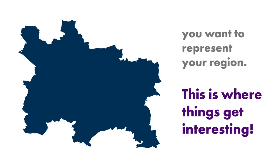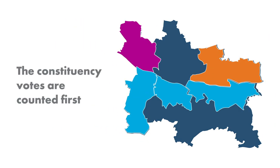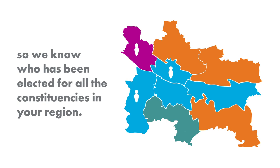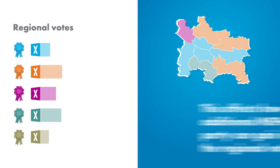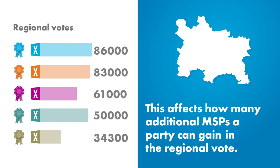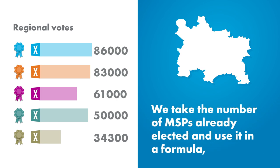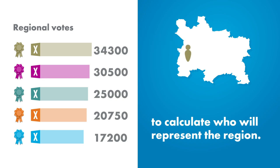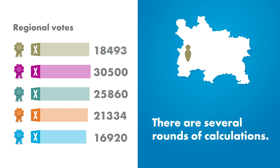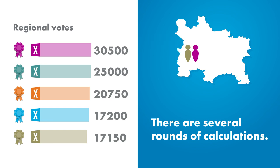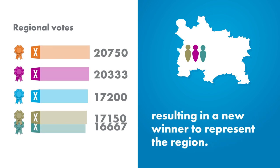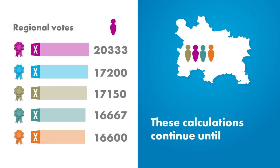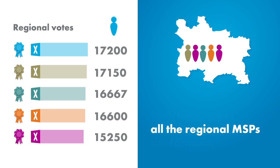This is where things get interesting. The constituency votes are counted first, so we know who has been elected for all the constituencies in your region. This affects how many additional MSPs a party can gain in the regional vote. We take the number of MSPs already elected and use it in a formula to calculate who will represent the region. There are several rounds of calculations. Each time, votes are divided using the formula, resulting in a new winner to represent the region. These calculations continue until all the regional MSPs have been elected.